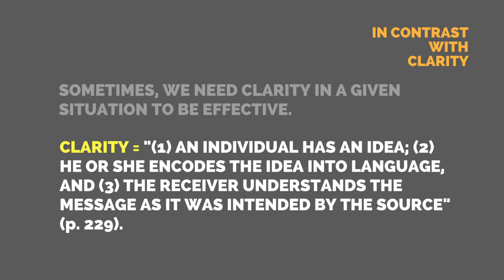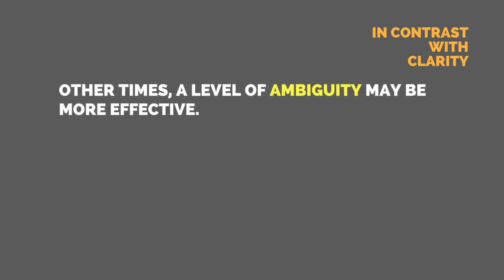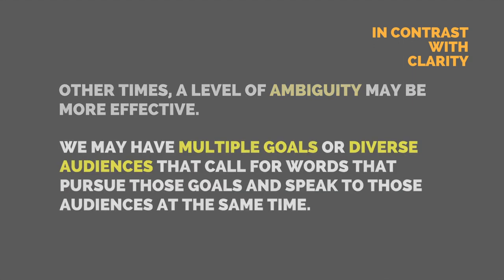That should sound familiar — it's like the classic sender-message-channel-receiver model of communication, which is all about clarity. In contrast, other times a level of ambiguity may be more effective. We may have multiple goals or diverse audiences that call for words that pursue those goals and speak to those audiences at the same time, and an overly clear message may not do the job.